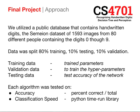Training data was used to train the parameters directly used in classification. Validation data was used to train the hyperparameters — details about the classification algorithm such as desired depth or number of leaves. Testing data was used to see how accurate the network was. Each algorithm was assessed on accuracy, defined as the total number of correctly classified digits over the total number classified, and on classification speed, measured using the time library.